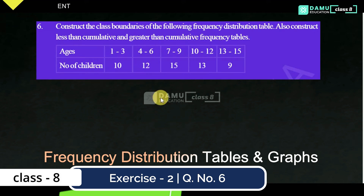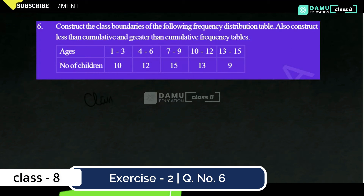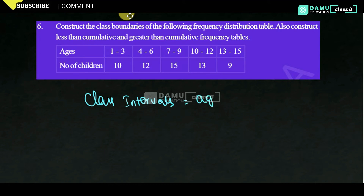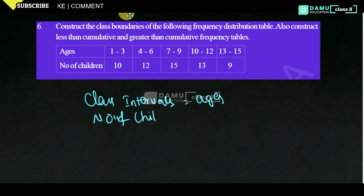Here, they are given data with class intervals — that is, ages — and the number of children, which will be equal to frequency.